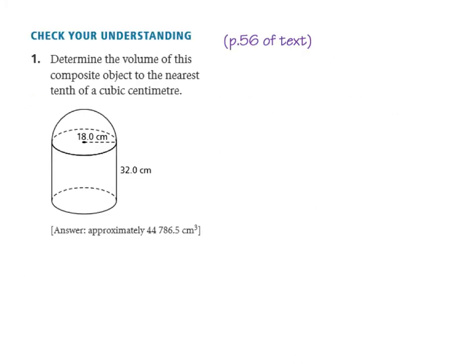Let's start then with this first example from page 56 of your textbook. Our job is to determine the volume of this composite object. In terms of the volume, we have our cylinder plus our hemisphere.